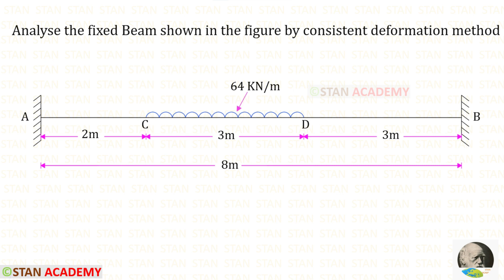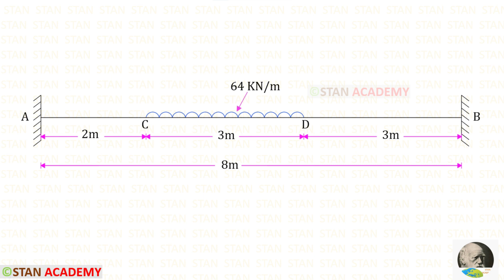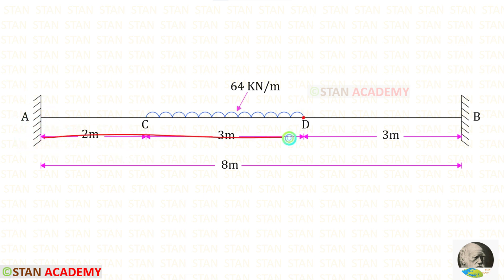Hello everyone. Today we are going to analyze a fixed beam using the consistent deformation method. The span of the beam is given as 8 meters. We have a uniformly distributed load of 64 kilo Newton per meter. It acts for a distance of 3 meters, starting at 2 meters from the left support and ending at 5 meters from the left support.